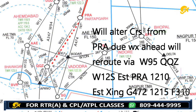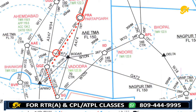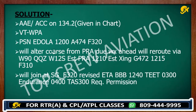Due to weather ahead, will reroute via — we have to mention the complete route after Pratapgarh until we rejoin the original track. After Pratapgarh, we would follow Whiskey Niner 5, then Cubic Cubic Zulu, then follow Whiskey 1 to south. Estimating Pratapgarh 1210. Estimating crossing Golf 472 at 1215, flight level 310. Will join at Sierra Golf, flight level 320. Always mention any crossing that comes between two points — you get five marks for it.